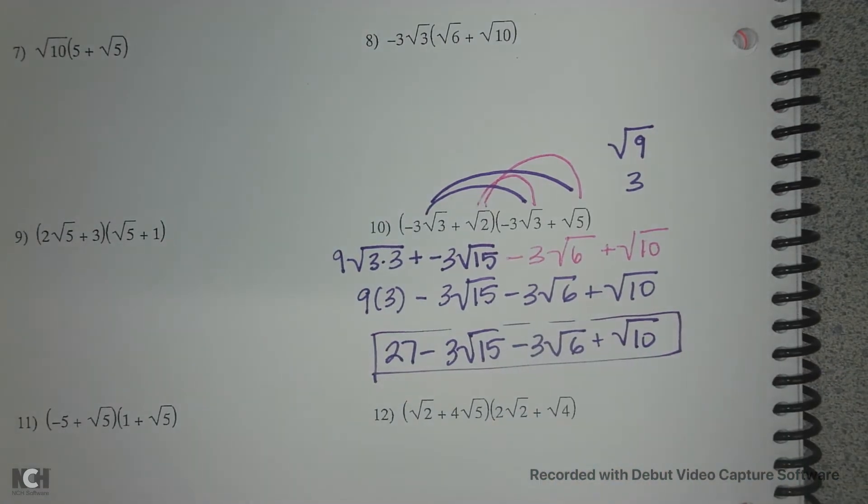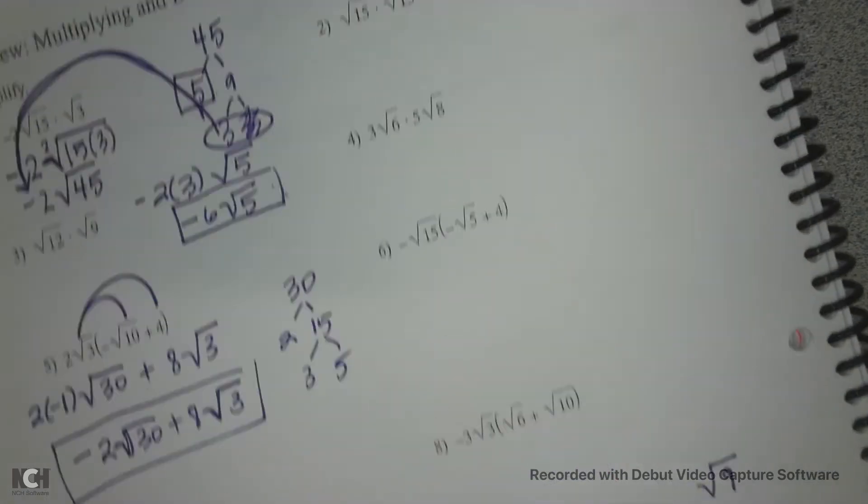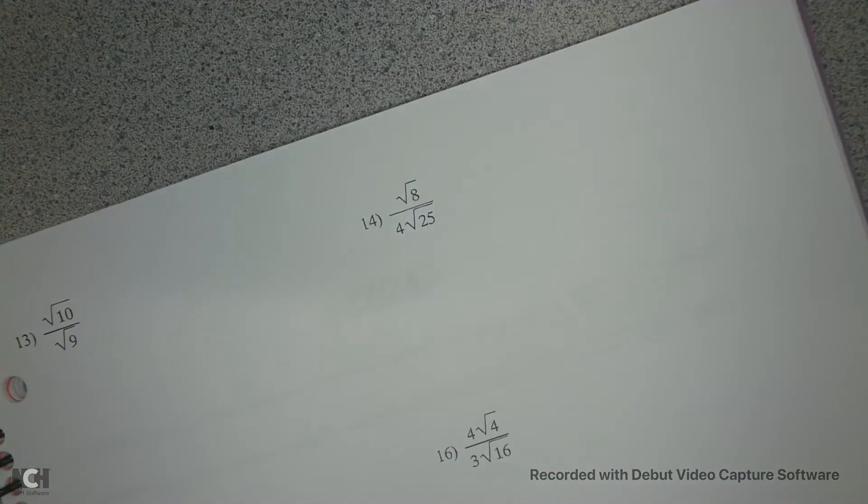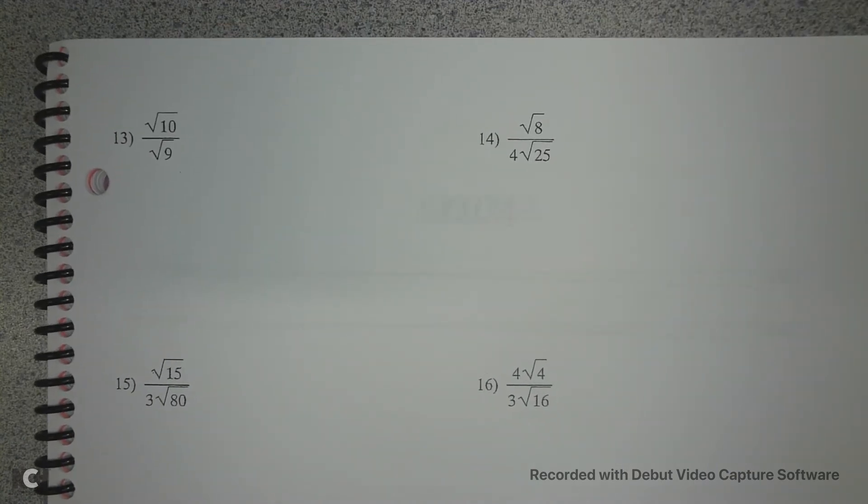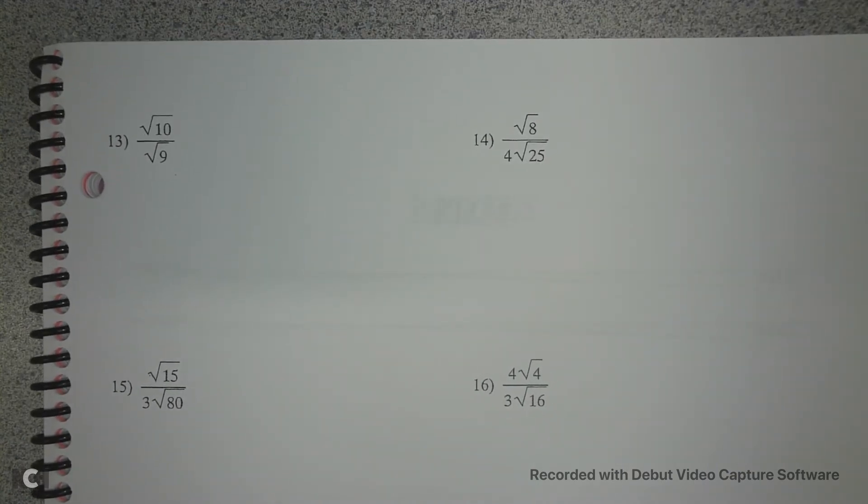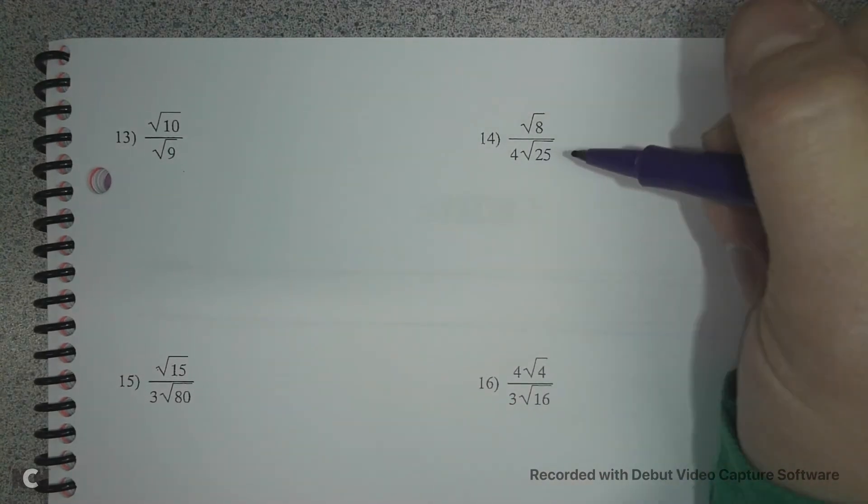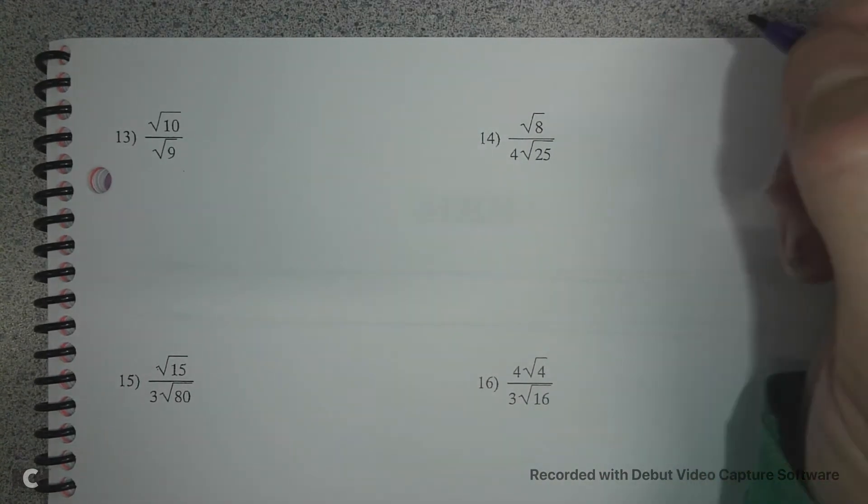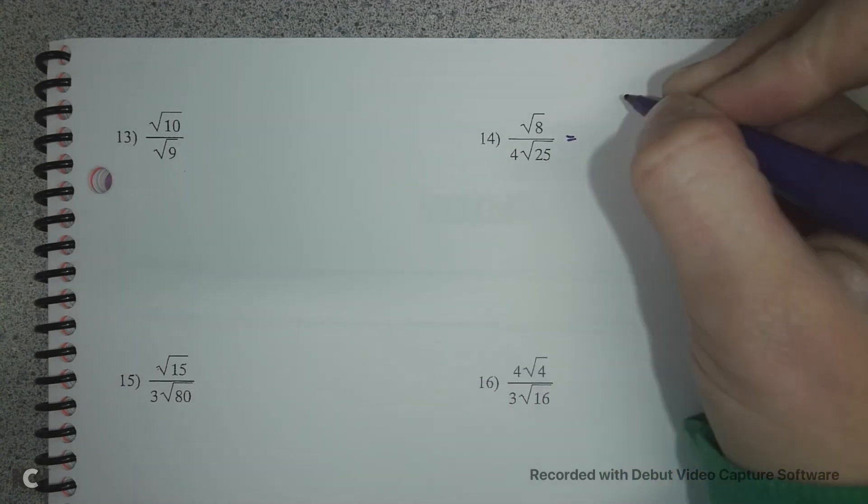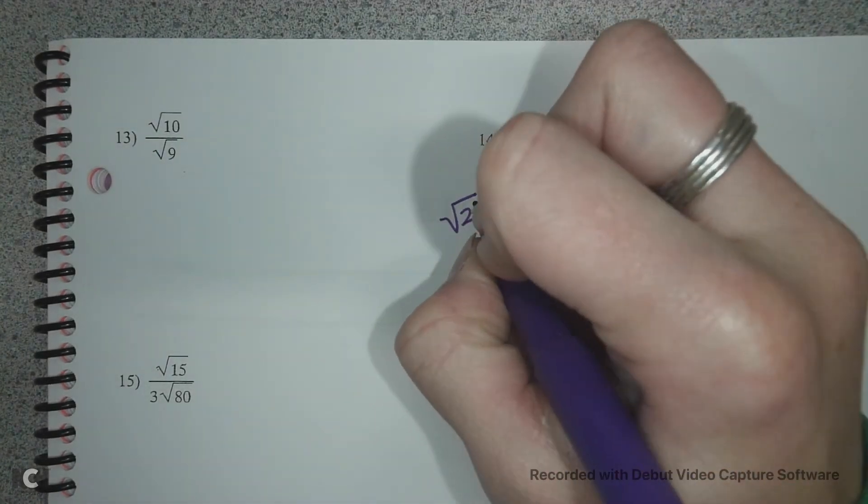Let's look at the next page. Oh yeah, division. Okay, so on number 14, this 25 is a perfect square, so I could rewrite that if I wanted to, or I could just do the square root of 25 is 5.